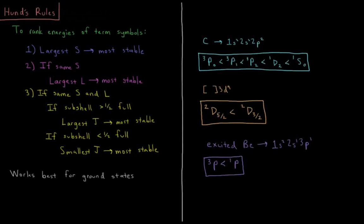This video will discuss Hund's rules for ranking the relative energies of the different term symbols of an atom. For ranking our term symbols, we look at the values of S, L, and J.